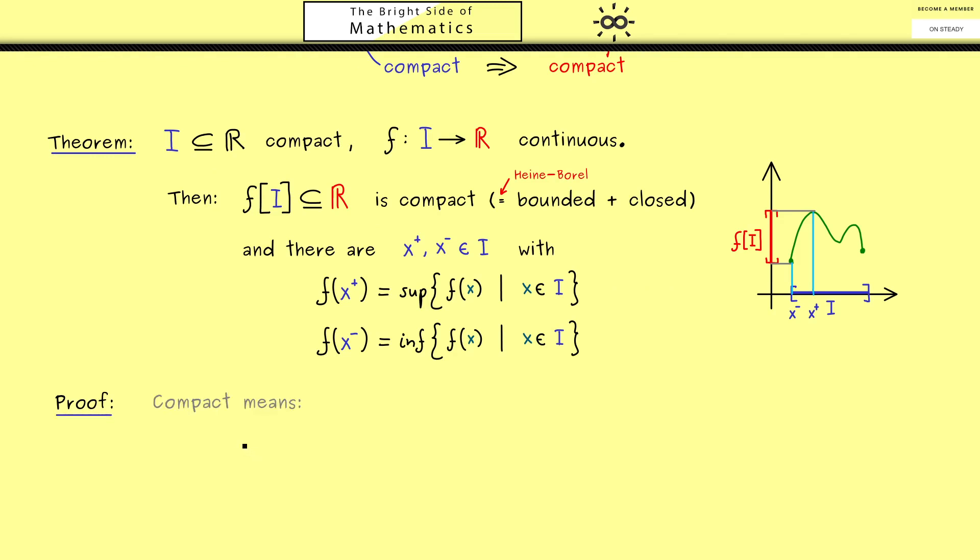Now compact for a set means if you choose any sequence with elements from this set, there is a convergent subsequence where the limit lies also in this set. In short, every sequence has a convergent subsequence. And now for this reason here we should start with a sequence yn. Of course the elements should come from the image we are interested in.